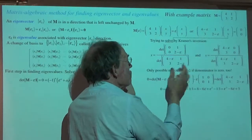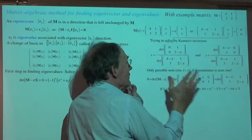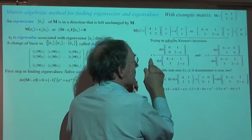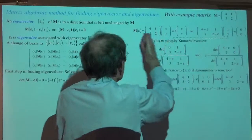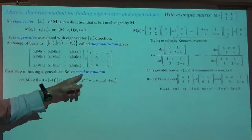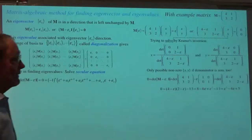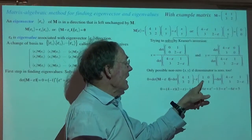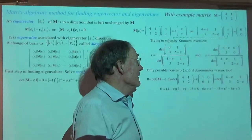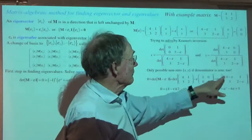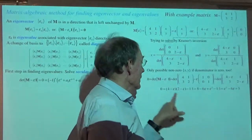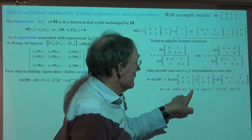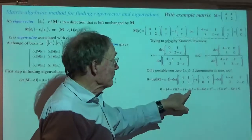You've got to save yourself. The only possibility that these things are not zero is if the denominator is also zero — for a zero numerator, the only hope is if the determinant is zero, and then I might get a non-zero result. This is called the secular equation: determinant of that expression equals zero. That comes out very nicely: (4 minus epsilon)(2 minus epsilon) minus 1 times 3 equals zero.